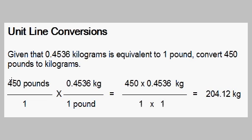We always take what we are given and write it as a fraction over 1. In this case we are given 450 pounds to convert, so we write it over 1 as a fraction. We then write the conversion factor as a multiplied fraction so that the units cancel.